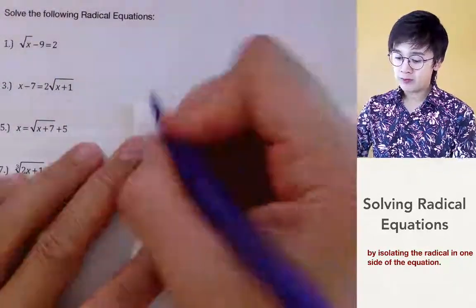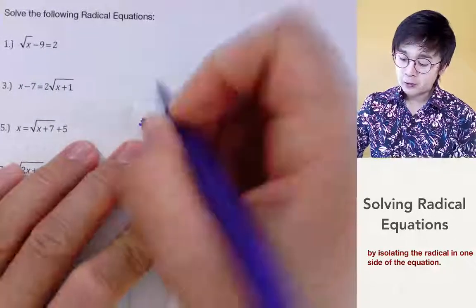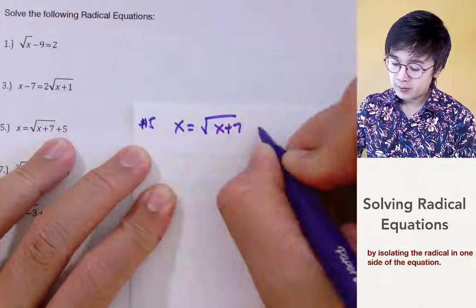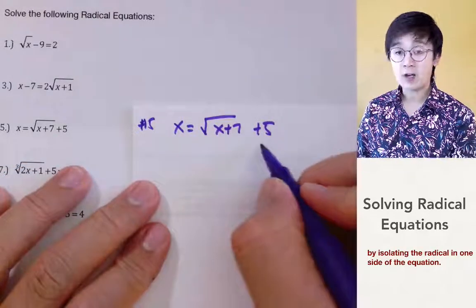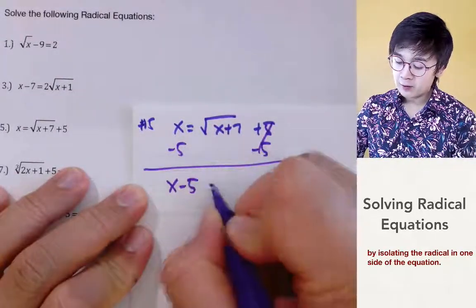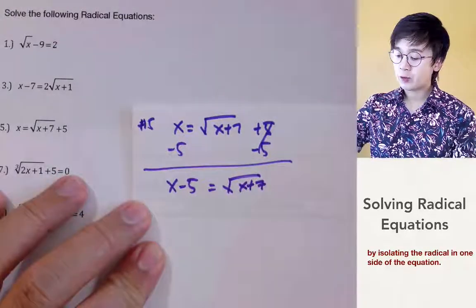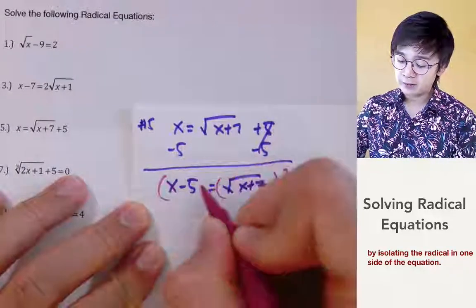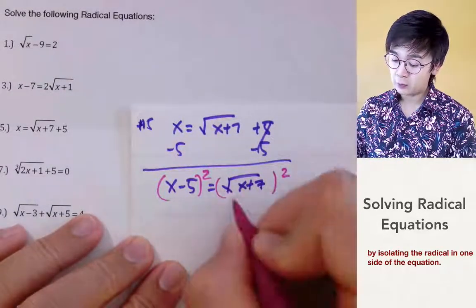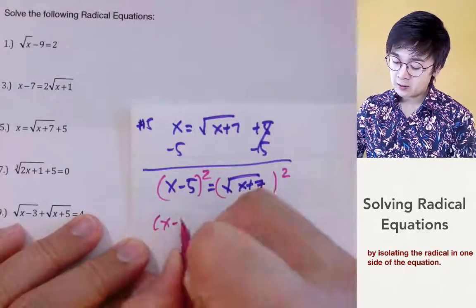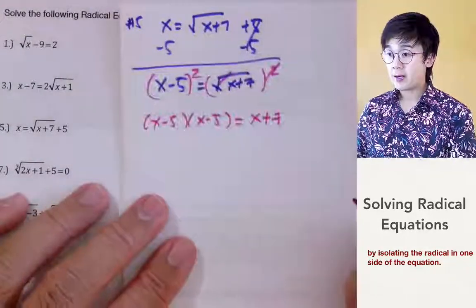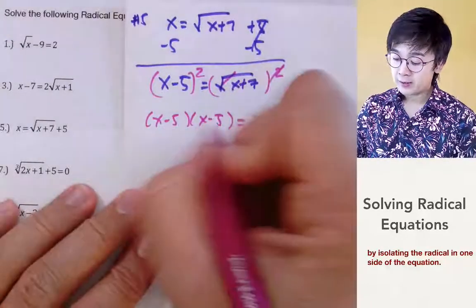Now let's answer problem number 5. Some radical equations are easy to solve, some are more complicated. We have x equal to square root of x plus 7 plus 5. Since we have a constant with the radical expression, we get rid of it by subtracting 5, giving x minus 5 equal to square root of x plus 7. Now that the radical is isolated, we square both sides: x minus 5 times x minus 5 equals x plus 7, since the square root cancels.